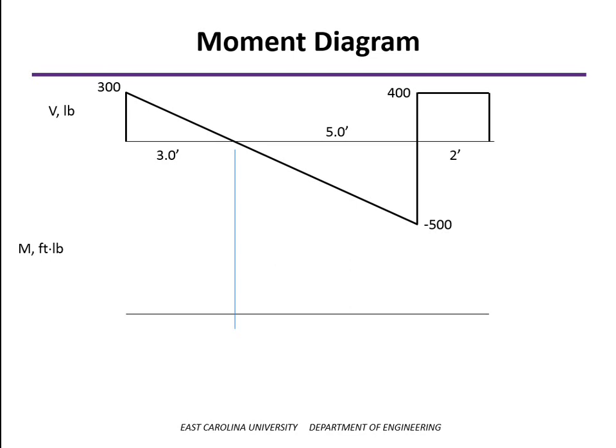To draw the moment diagram, we look at the areas underneath the shear diagram. In the first triangular area, one-half base times height gives us an area of 450 foot-pounds. Since there are no concentrated or external moments, we start at zero and go up 450 to get to the moment value at the point where the shear equals zero. The slope of the moment diagram equals the value of the shear, so where shear is zero the slope of the moment diagram is zero — we start out at a positive slope and work up to a slope of zero.